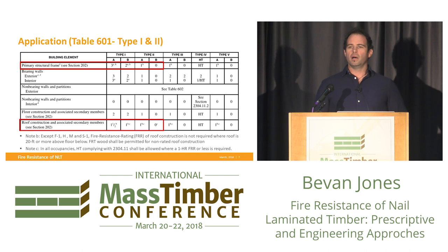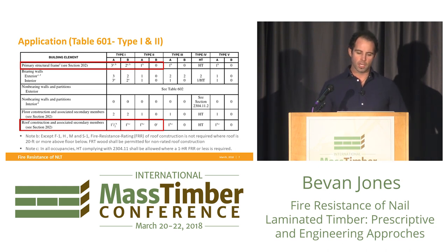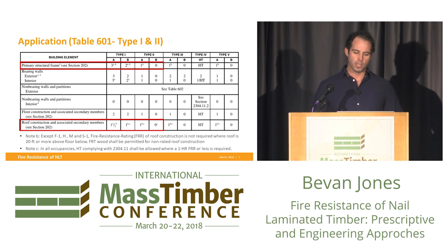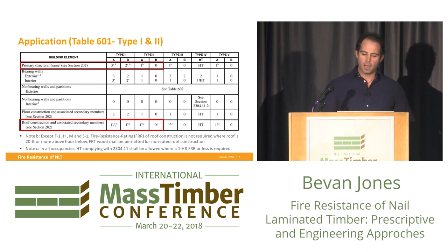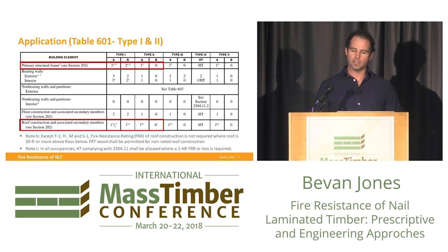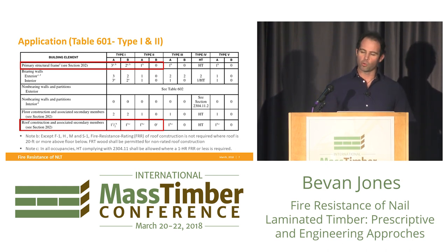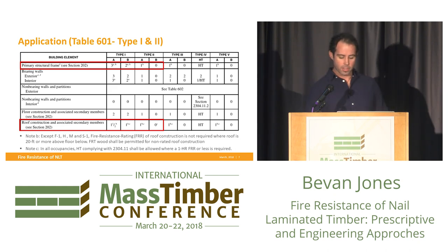Looking at applying heavy timber or NLT in non-combustible buildings such as Type 1 and Type 2 construction: there are a couple of exceptions in Table 601 that allow heavy timber construction. Under Note B for the primary structural frame or roof construction, you can utilize heavy timber as an alternate where a one-hour rating is required. When a roof structure is 20 feet above the floor below, you can actually not require that roof structure to be rated, and there's an alternate allowing fire retardant treated wood or heavy timber in lieu of that.